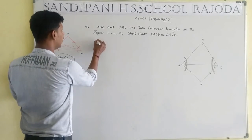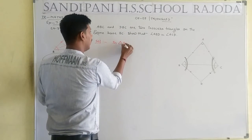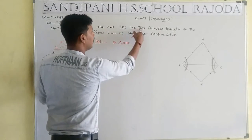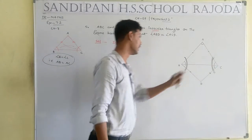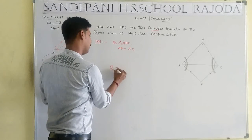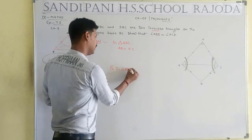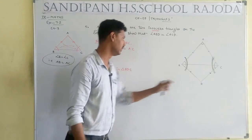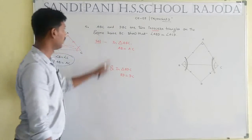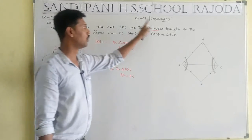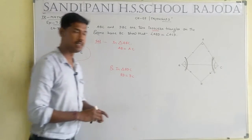Solution: In triangle ABC, by the property of isosceles triangles, we know that AB equals AC. And in triangle BDC, BD equals DC. Both triangle ABC and triangle BDC are isosceles triangles, so their opposite sides are equal, which means the opposite angles are equal.